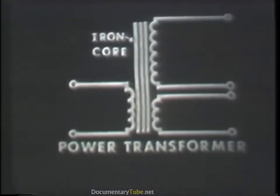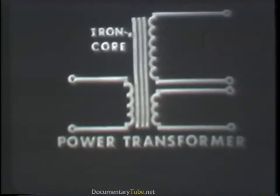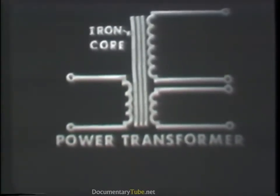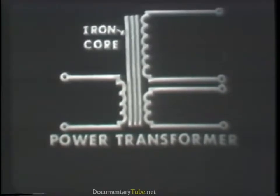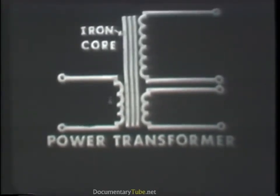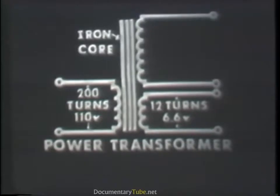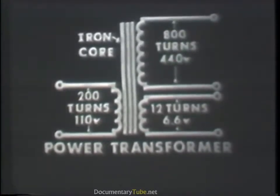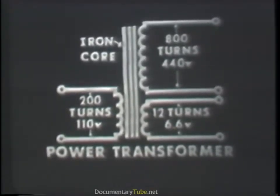Quite frequently, especially when dealing with schematics, you'll have to recognize a type of transformer by its schematic symbol. The schematic symbol for the power transformer can usually be identified by there being more than one secondary winding. In this case, there are two secondaries. Each secondary has a different number of turns — one has fewer turns than the primary, producing less voltage, while the other has more turns and thus produces more voltage. You'll also notice that the power transformer is constructed with an iron core.